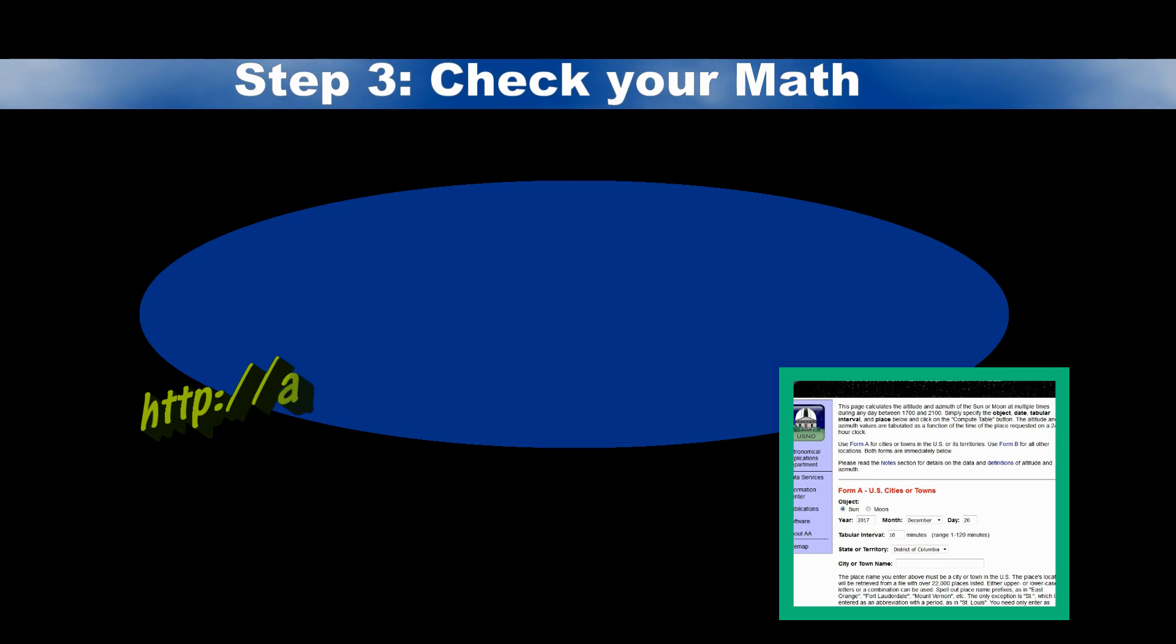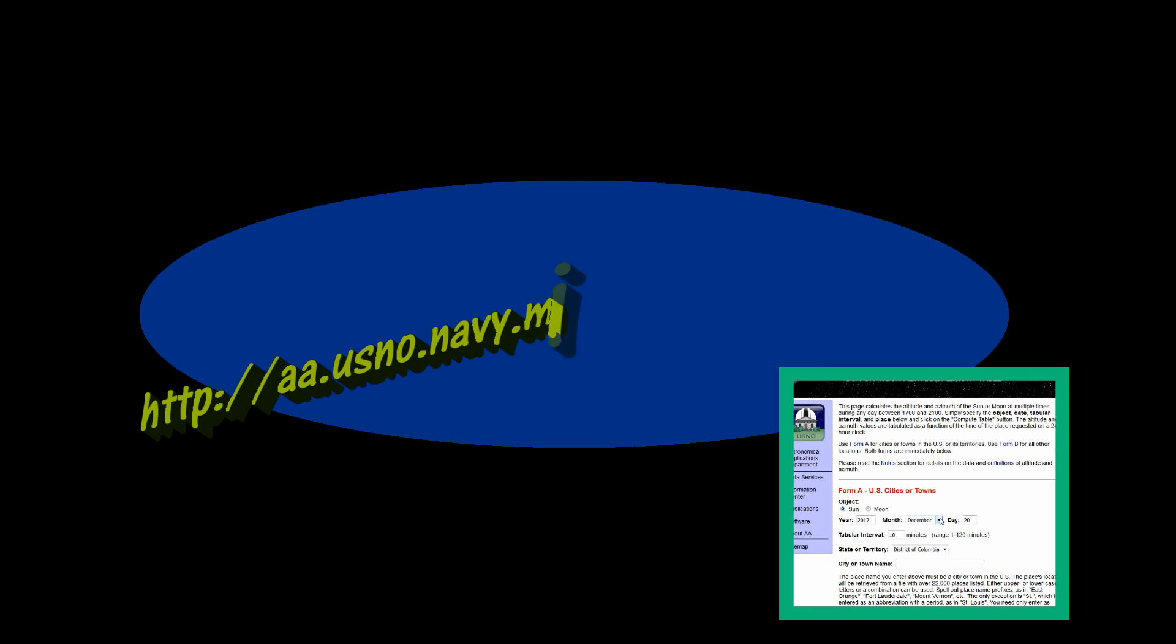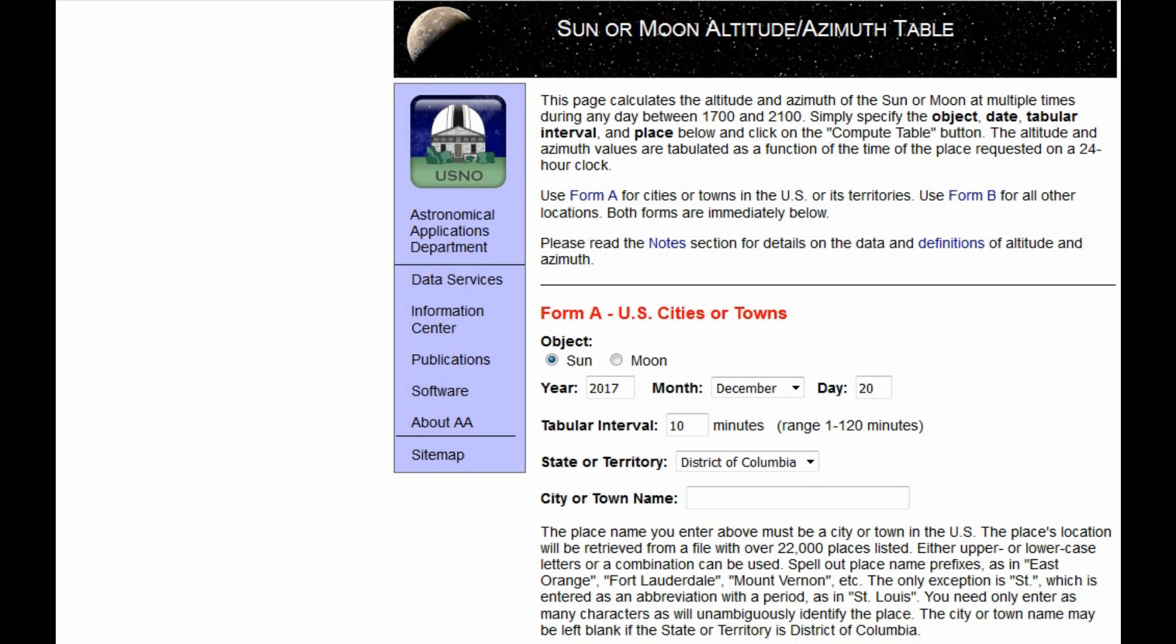To check your math, you can look up your city's altitude on the U.S. Naval Observatory website. On their webpage, enter the date of the summer solstice, June 21st, and your city. Then click calculate table.